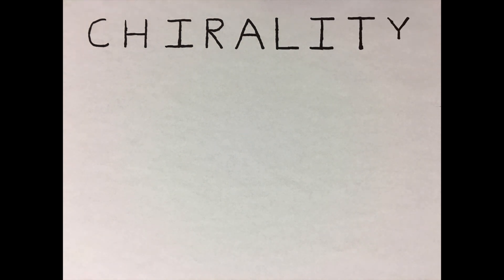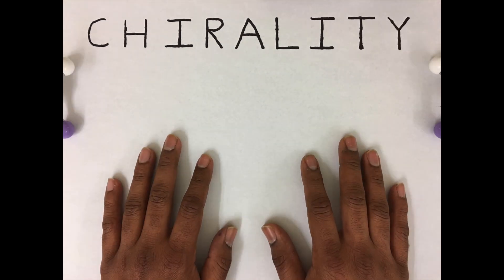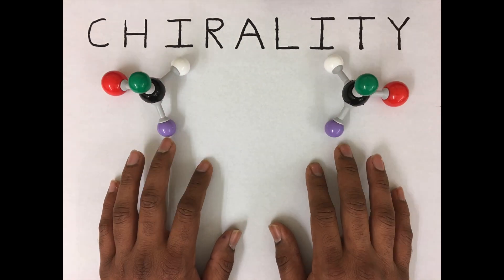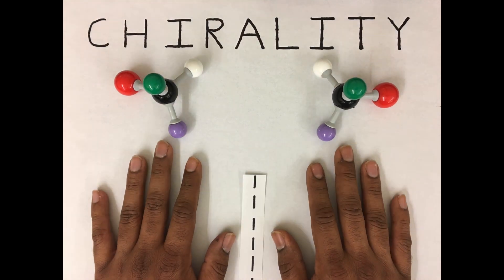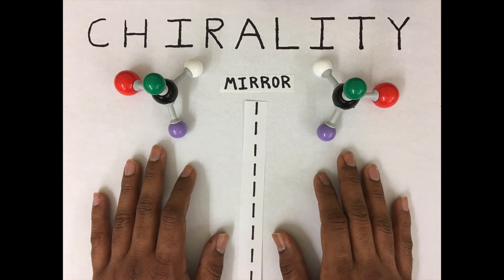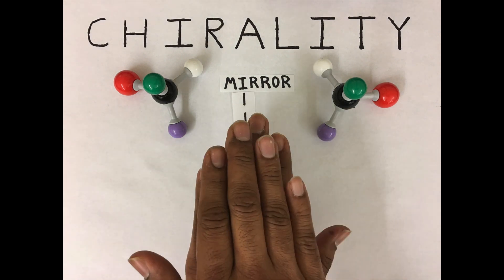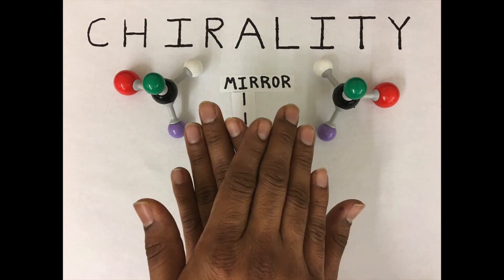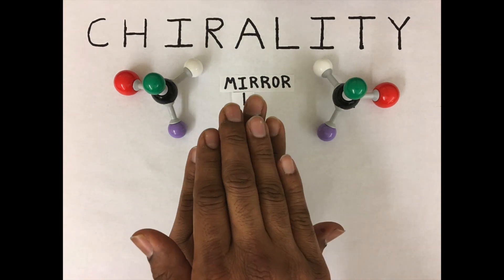Chirality is just like your right and left hand. Two molecules have exactly the same chemical composition, like you have the same five fingers on each hand, but they're arranged differently. The molecules, like your hands, are mirror images of each other, and they are not superimposable. So if you put one on top of the other, no matter how much you rotate it, it will never line up.